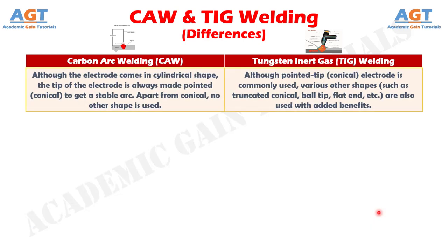Number 6: In carbon arc welding, although the electrode comes in a cylindrical shape, the tip of the electrode is always made pointed or conical to get a stable arc. Apart from conical, no other shape is used. Whereas in TIG welding, although a pointed or conical tip electrode is commonly used, various other shapes such as truncated conical, ball tip, flat end, etc., are also used with added benefits.